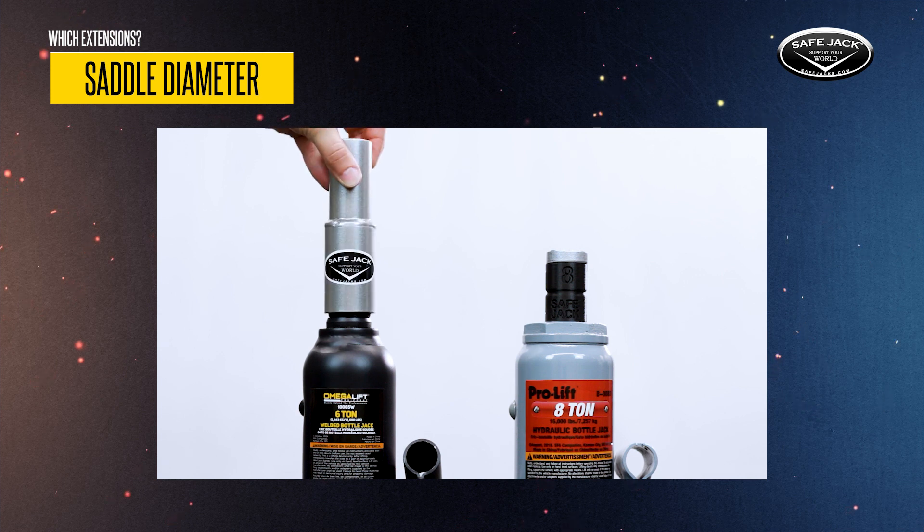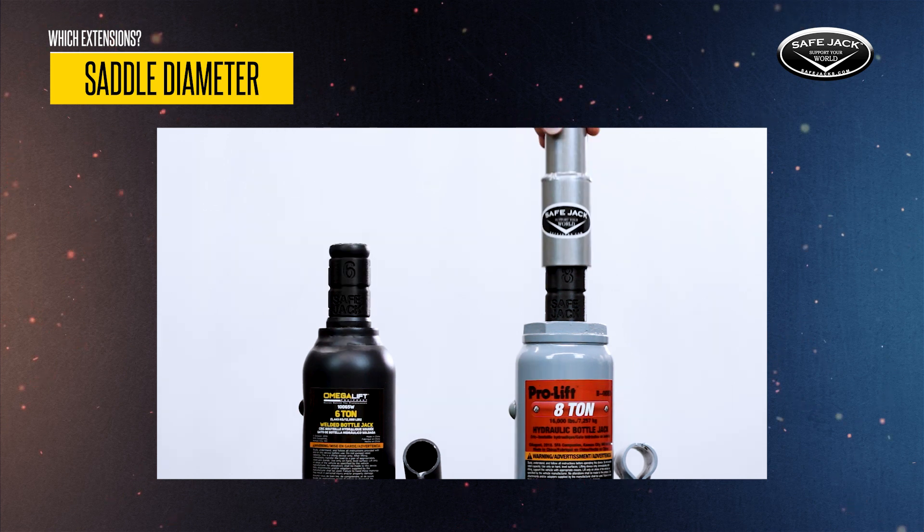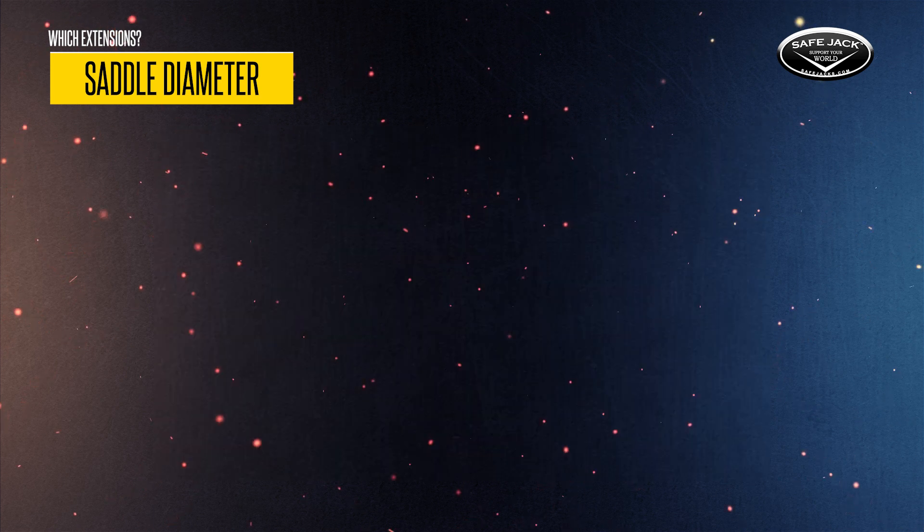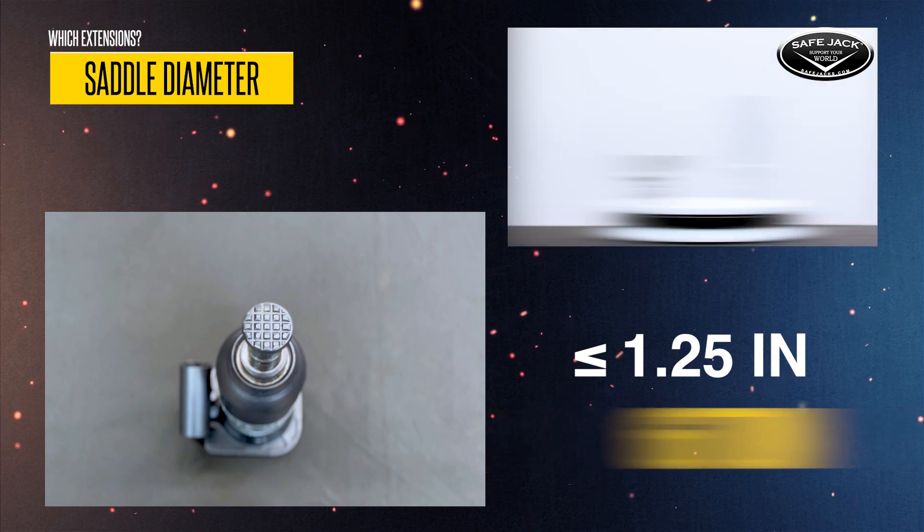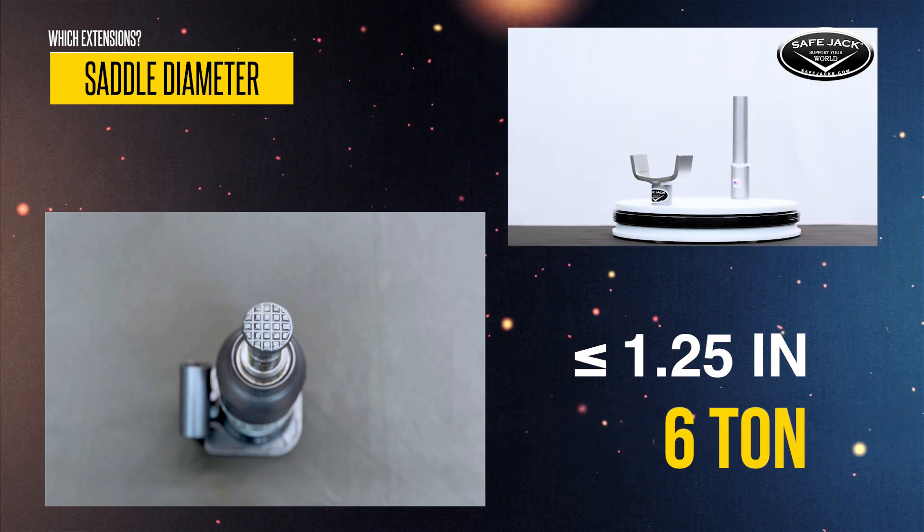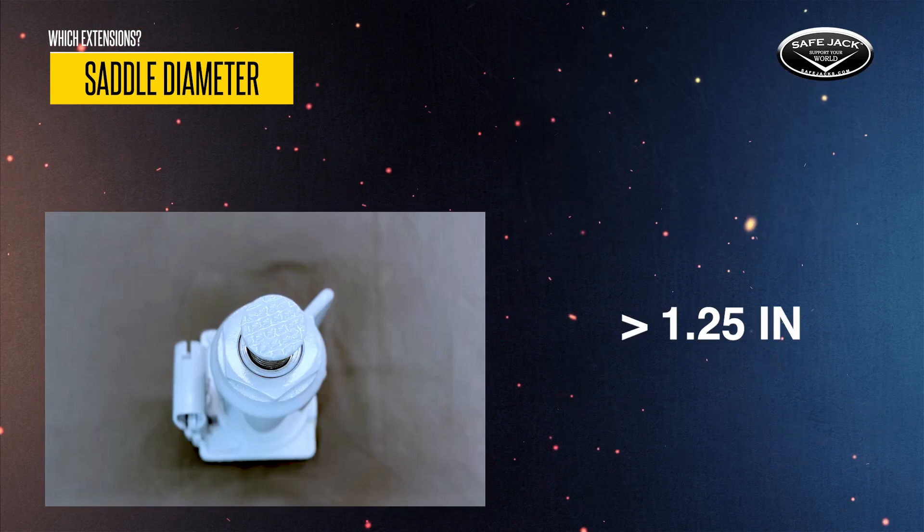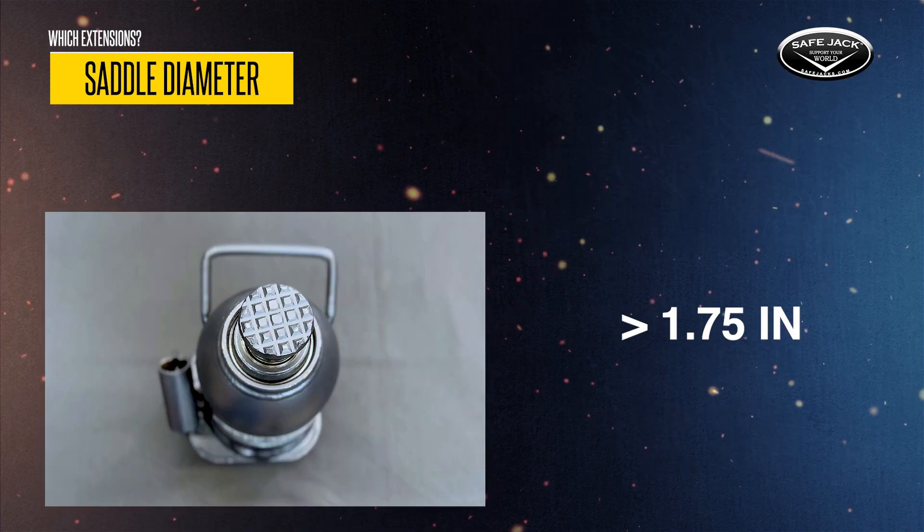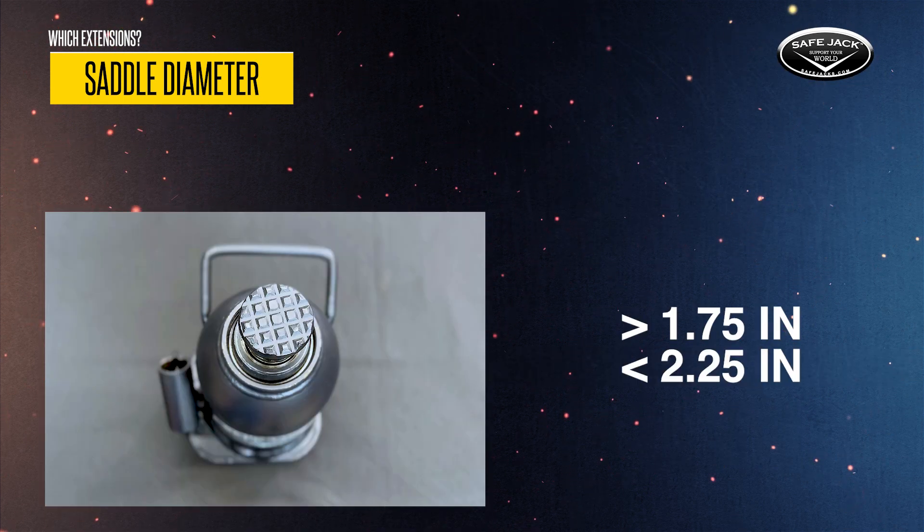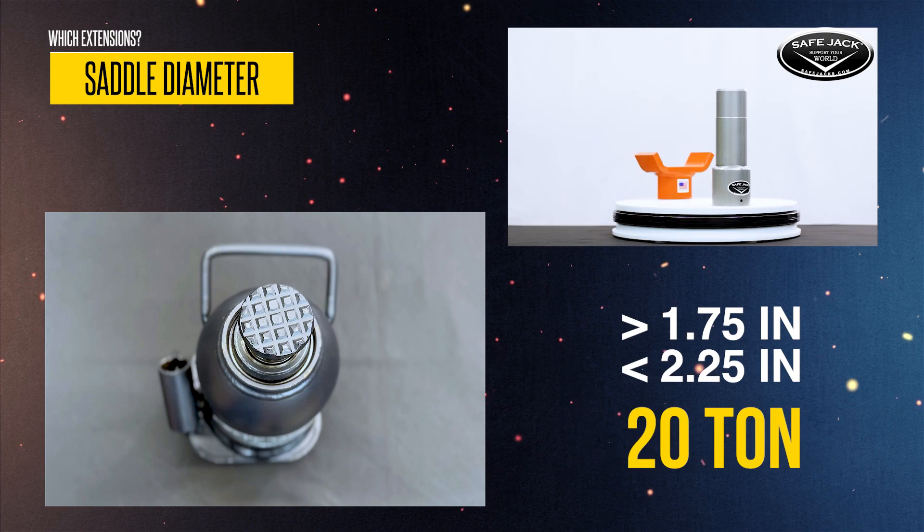For example, our 6-ton extensions and lift pads may also fit on your 8-ton bottle jack. If your jack saddle is 1.25 inches or smaller, then you can use our 6-ton extensions. If it's over 1.25 inches and less than 1.75 inches, then you'll need the 12-ton extensions. If it's over 1.75 inches and less than 2.25 inches, you'll need the 20-ton extensions.